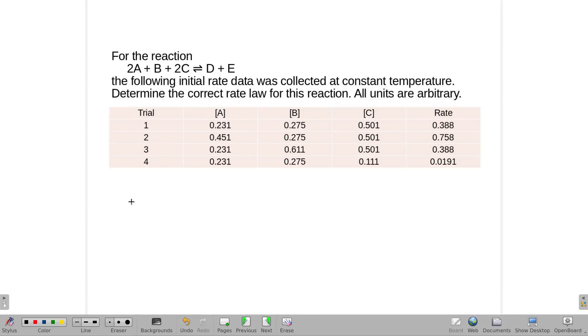For the reaction 2A plus B yields 2C, the following initial rate data was collected at constant temperature. We want to determine the rate law for this.